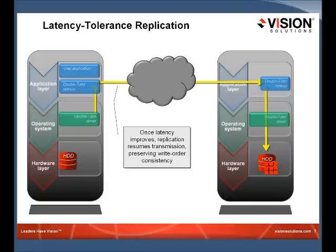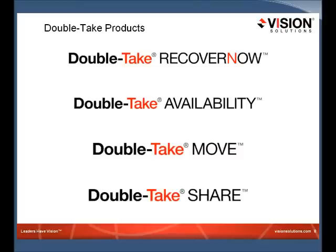That's the basic overview of the DoubleTake replication engine. Now we'll talk about the actual DoubleTake products. We have Recover Now for disaster recovery, the Availability product for high availability, DoubleTake Move as a migration-specific product, and DoubleTake Share for data movement and transformation specific to databases. The first three use the DoubleTake replication engine just described; the last one uses a different replication mechanism.